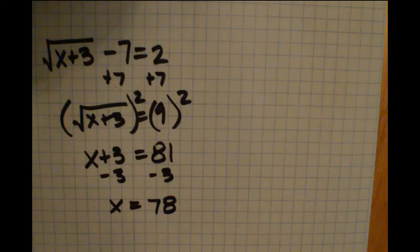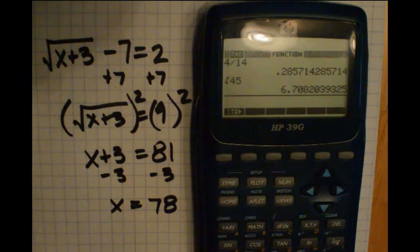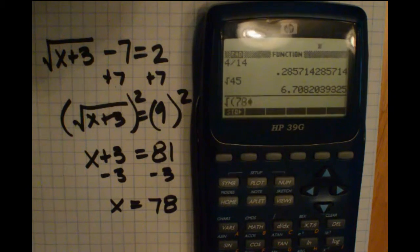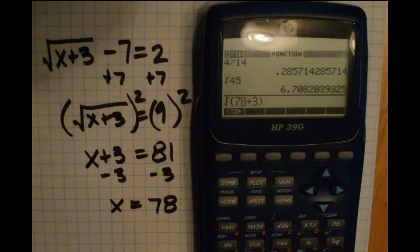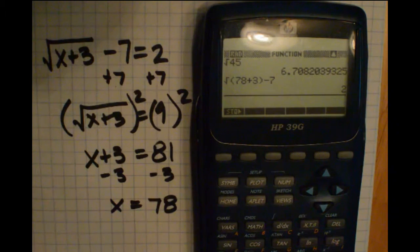If you wanted to go ahead and check this in a calculator, what you would do is just kind of type in exactly as you see it. I'm going to take the square root of 78. Let's get some parentheses in there. Of 78 plus 3. Close that. That's all inside the square root. And I'm going to subtract 7. And if this is the right answer, I should get 2. And I got 2. So it worked.